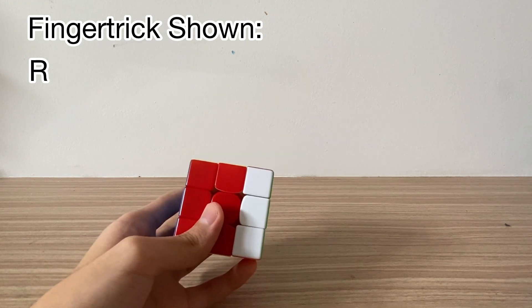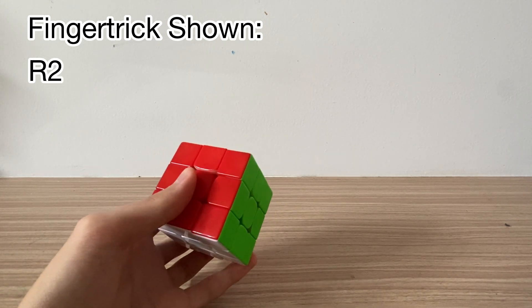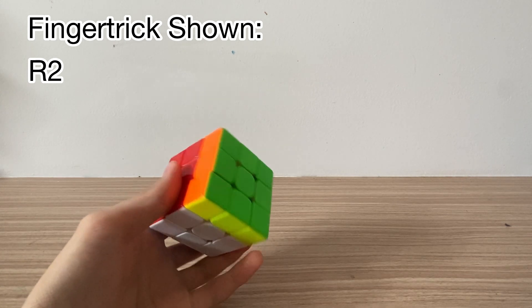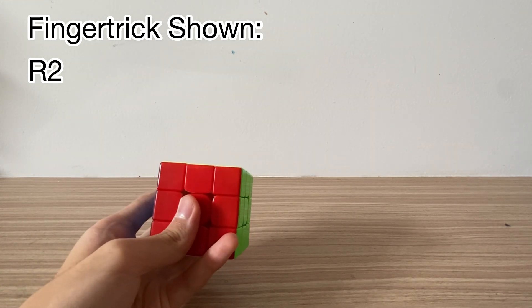So for R, you do this with your pinky. R prime you pull down. For R2, you can do this. Just do R twice, or you can do like a D2. But what I prefer is the R2 like this.